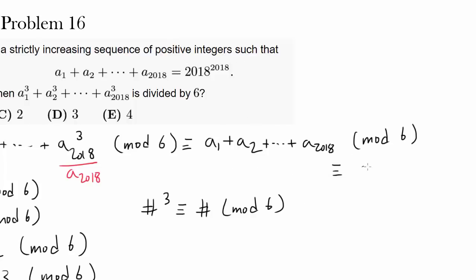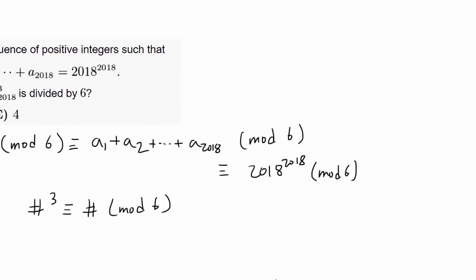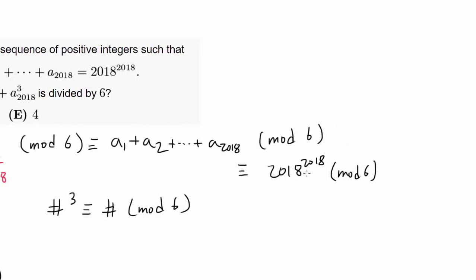We simply have to find 2018 to the 2018th power in mod 6. Now, how can we attack this question? It looks much more simplified than this insane summation we had with all the cubing of numbers. Now, we simply have to find 2018 to the 2018 mod 6. Well, let's start by simplifying 2018 in mod 6. And if you divide 2018 by 6, we are going to get a remainder of 2. So we know this thing is 2 to the 2018 mod 6.